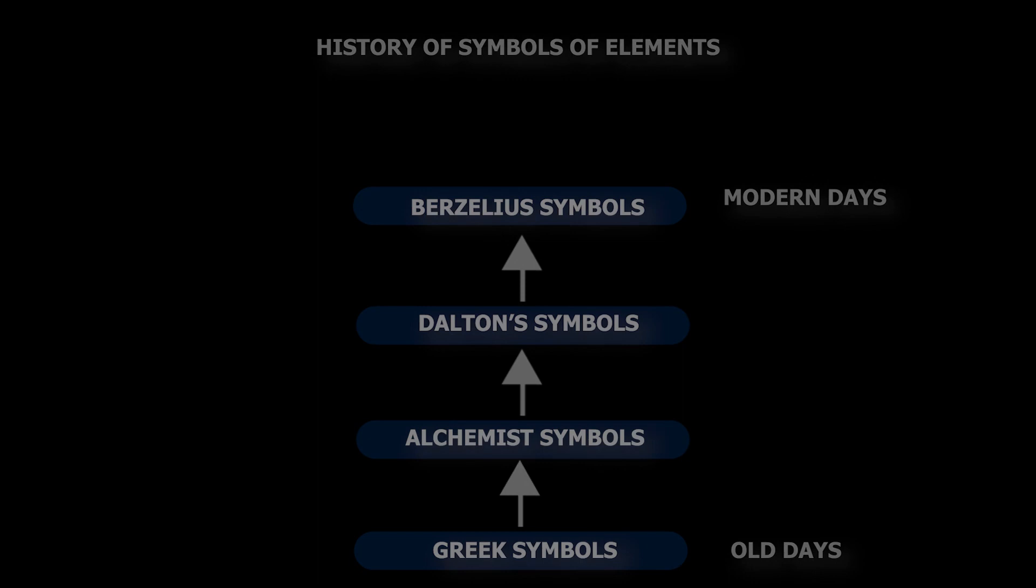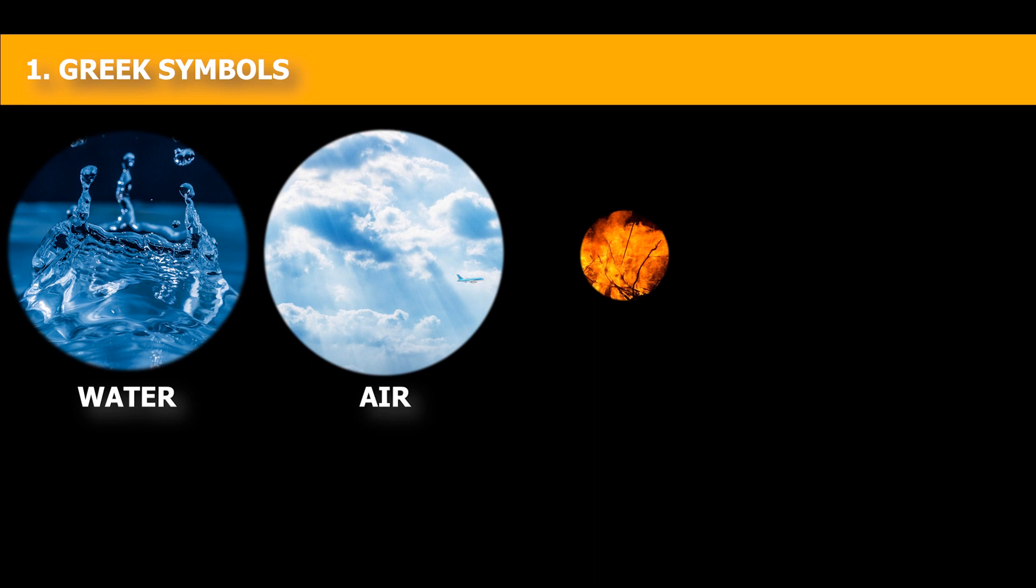1. Greek Symbols. In the very old time, Greeks were aware of only four elements: water, air, fire, and earth.